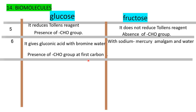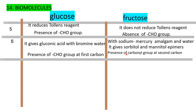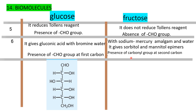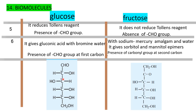With sodium mercury amalgam and water, glucose and fructose give sorbitol and mannitol respectively. Fructose has a carbonyl group at the second carbon — a C=O bond at C2, while glucose has CHO at C1.